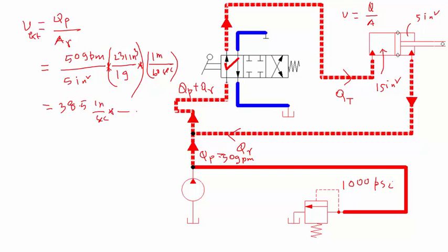I have found 38.5 inch per second. Now this inch again I can change it to foot. I know that 12 inch is 1 foot. So I have got 3.2 foot per second for the extension velocity.